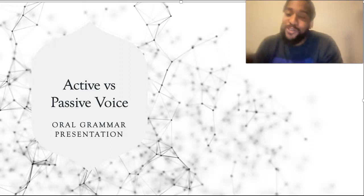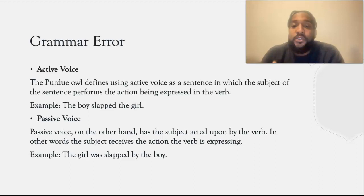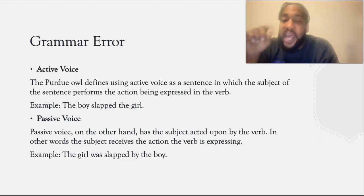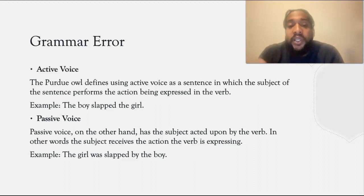The Purdue Owl defines using active voice as a sentence in which the subject of the sentence performs the action being expressed in the verb. An example is, the boy slapped the girl. In this case, the subject, the boy, is performing the action of slapping the girl.